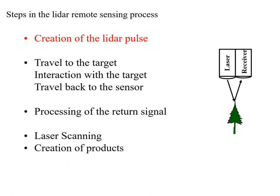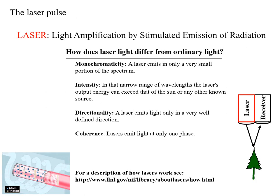So let's go through the steps in the LIDAR remote sensing process. The first thing is to create a laser or LIDAR pulse. LASER is an acronym — Light Amplified by the Stimulated Emission of Radiation. There's some material, which could be solid, liquid, or gas, and you stimulate it somehow either with light or electricity, and that causes an amplified emission of radiation.